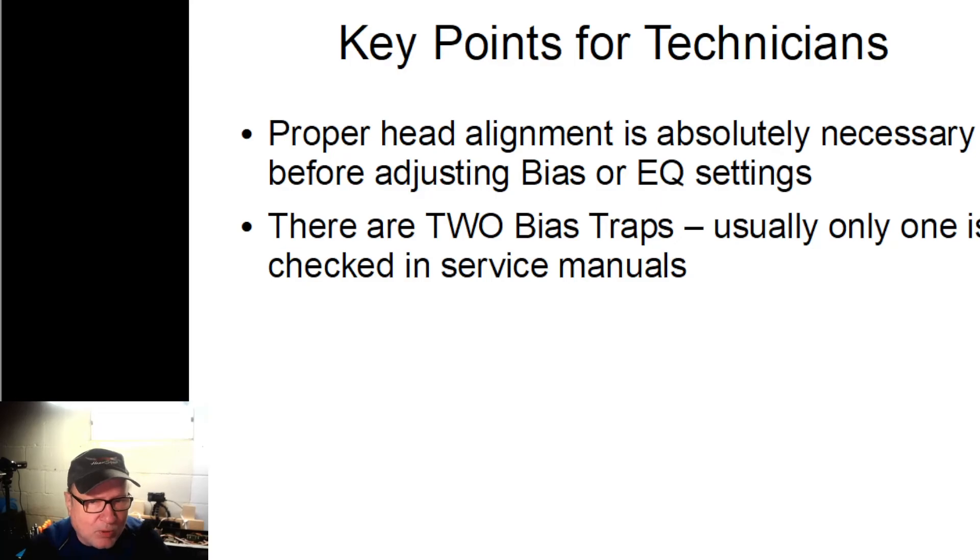There is a second bias trap on the output of the record amplifiers. But that bias trap is to prevent the bias oscillator signal that is going to be added to the output of the amplifier. It prevents the bias signal from seeping backwards into the last couple stages of the record circuitry. So service manuals almost always have you check the first bias trap, the one that's in the playback section, but they don't usually have you check the one that's on the output of the record section. So if you're having a recorded problem sometimes and you can't figure out what it is, you might want to look at that second bias trap and see if it needs to be adjusted. Perhaps some of that bias oscillator signal is working its way backwards into the record setting and causing distortion.